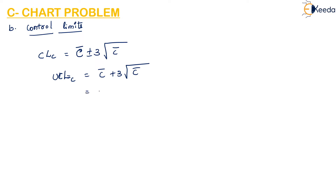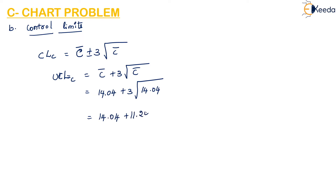So the UCL is 14.04 plus 3 into root of 14.04, which gives us 14.04 plus 11.24, equal to 25.28.